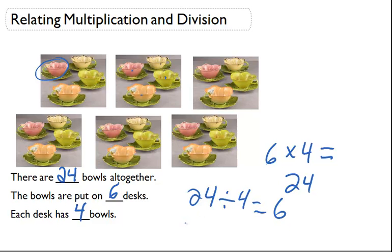And if we do it the other way, 24 divided by 6, which is how many desks there are, we'll find out how many bowls are on each desk, which is 4. And so that matches up with our answer right here. So either way, they relate to multiplication and division.